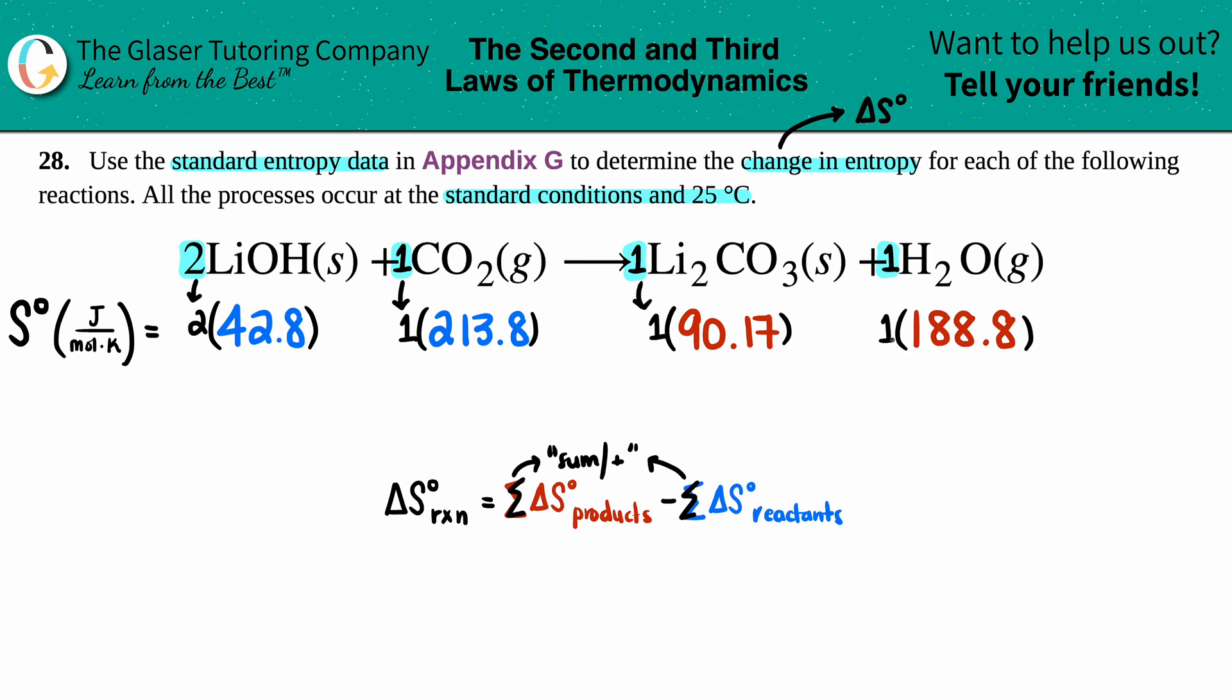This would be the same because you have one of these, and then this would also be the same because you have one. Now it's the sum. Literally it's LiOH plus CO2, so it would be this value plus this value. Li2CO3 plus H2O, so this value plus the 188.8.